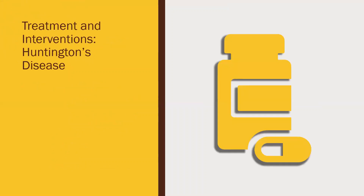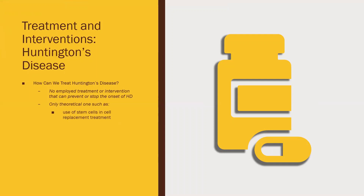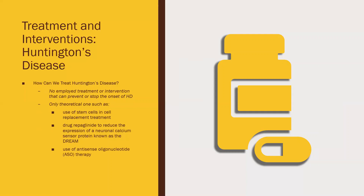Currently there is no treatment or intervention that can prevent or stop the onset of HD. Only theoretical ones exist, such as the use of stem cell replacement therapy to replace lost neurons, or the use of the drug replicade to reduce the expression of neuronal calcium sensors known as the DREAM protein, which has shown to increase neuronal protection in HD. The most promising theoretical approach is the use of antisense oligonucleotide therapy to catalyze the degradation of HTT and thereby slow the progression of HD. These remain theoretical studies with no guarantee of working in humans.